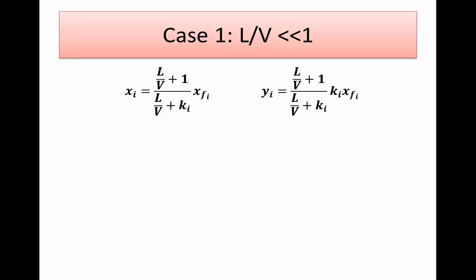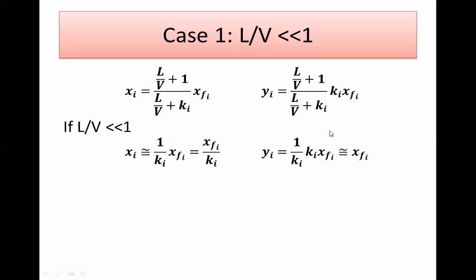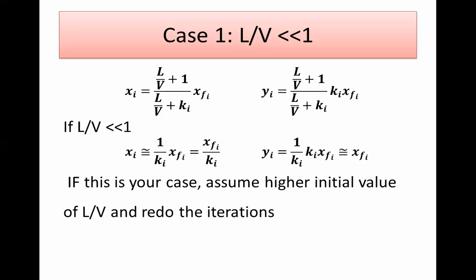The opposite problem: if L/V is a very small value, much smaller than 1 and much smaller than K, then X equals X_feed over K and Y equals X_feed — again one of them equals X_feed. In that case, assume a larger initial value of L/V and redo the iterations. I recommend starting with an initial value of 1, which avoids the problem of very large or very small starting values.